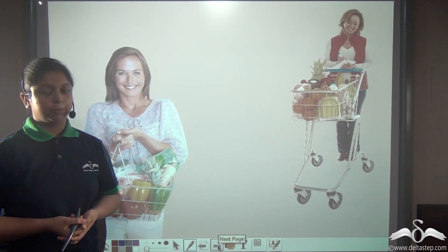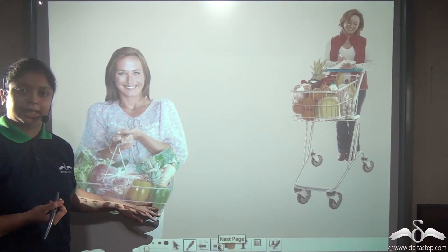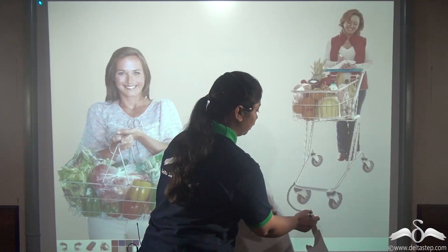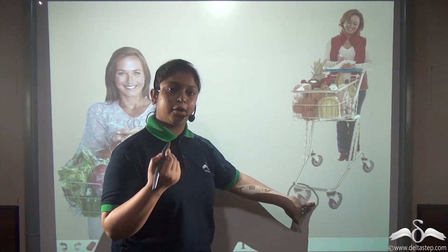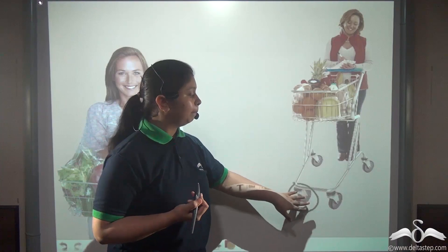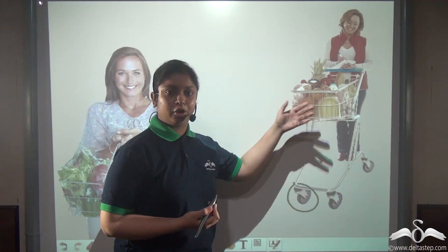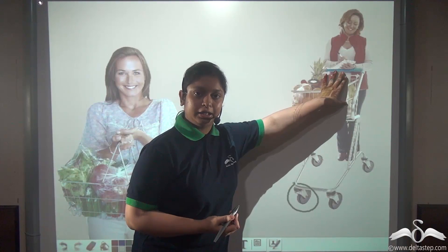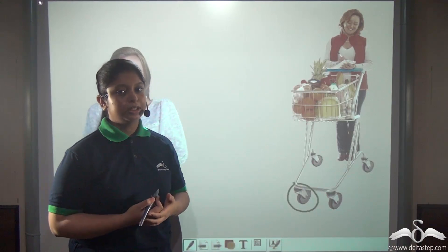Whenever you go to grocery shops or supermarkets, it becomes very difficult to carry your stuff in baskets. So we prefer using a trolley. You can see this trolley has a wheel connected to an axle — four of them. So this trolley having wheel and axle is also a simple machine, because it helps us carry heavy objects over a larger distance by applying a smaller effort on the handle, just by pushing the trolley.